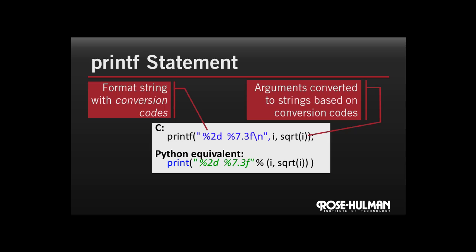Then at the end of the printf statement, we add as many arguments as we need to fill in the conversion codes. So the i here is filled in for the percent 2d conversion code, and the square root of i is filled in for the floating point conversion code. The other difference versus Python here is we actually need to give an explicit new line by saying backslash n at the end of the format string.